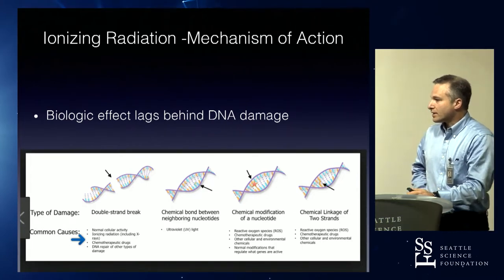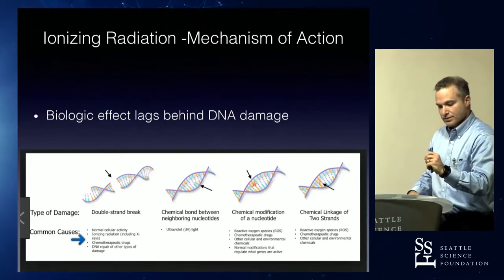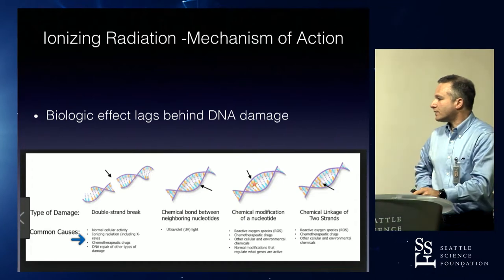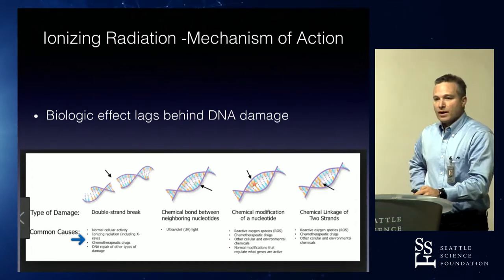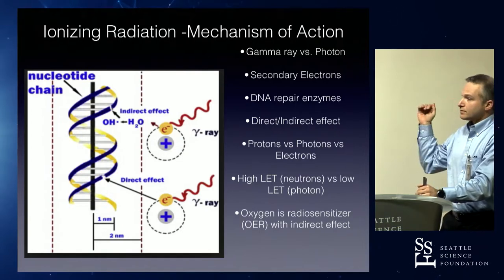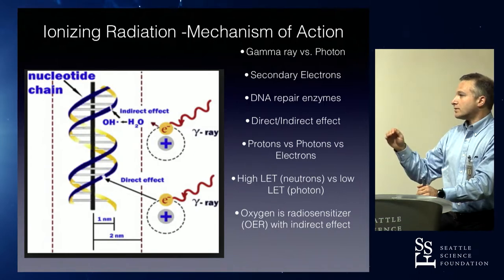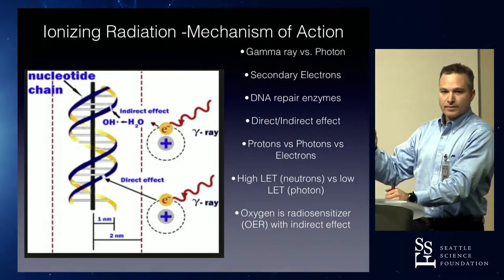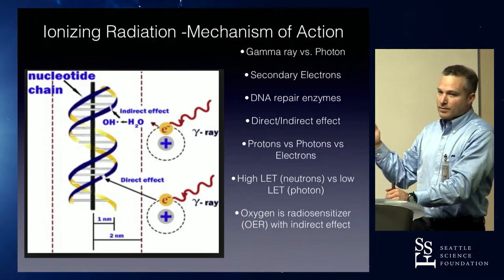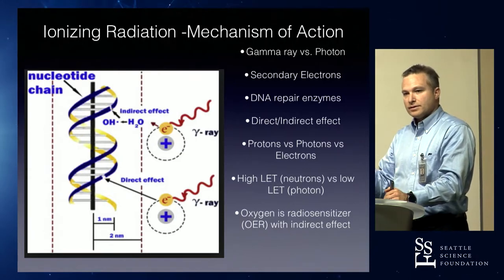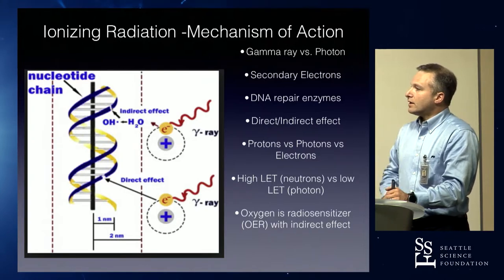You can create a double-strand break by having ionizing radiation — direct effect — or by hitting a water molecule. If the photon hits a water molecule and it's in very close proximity to the DNA, that will create an oxygen free radical for a few nanoseconds, and that will then damage the DNA. You can also create modifications through reactive oxygen species — free radicals.